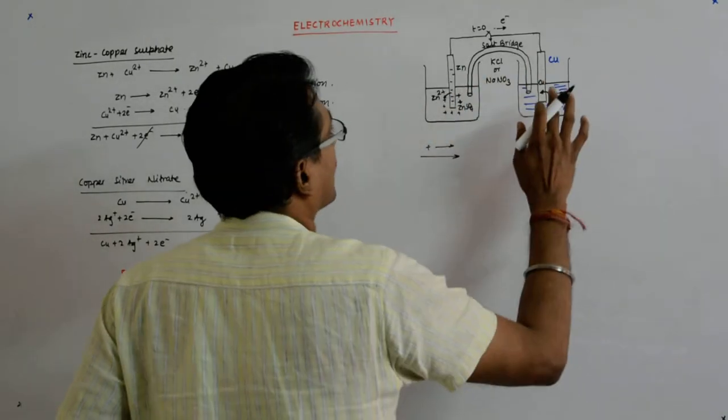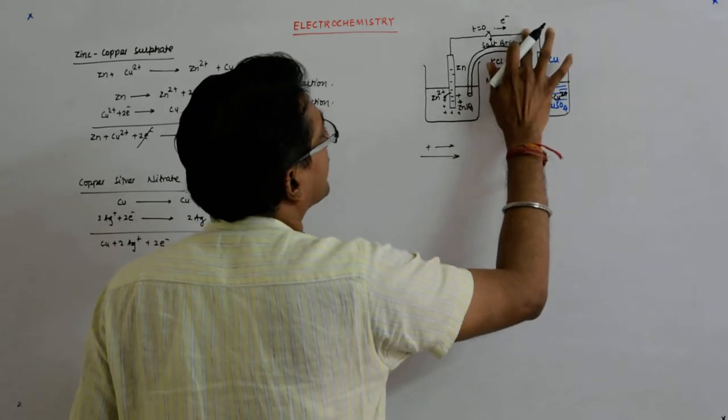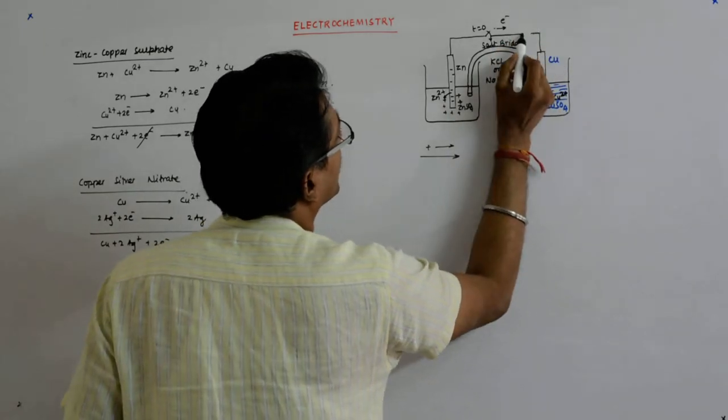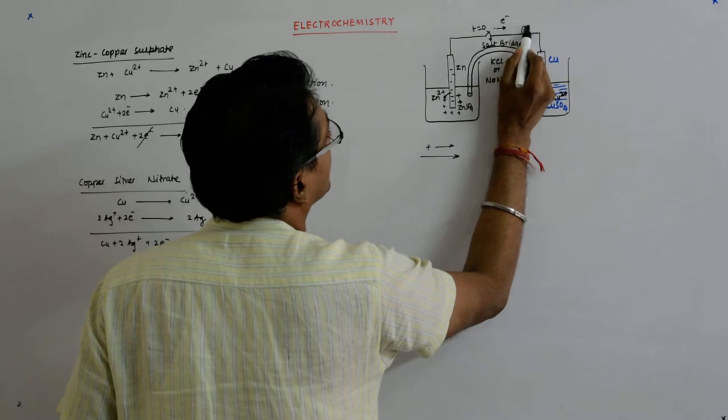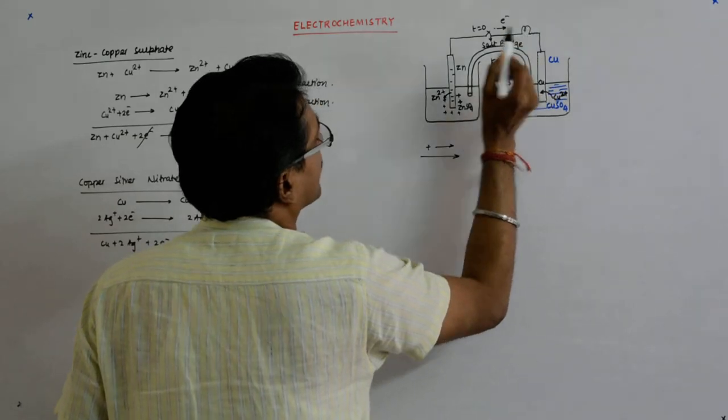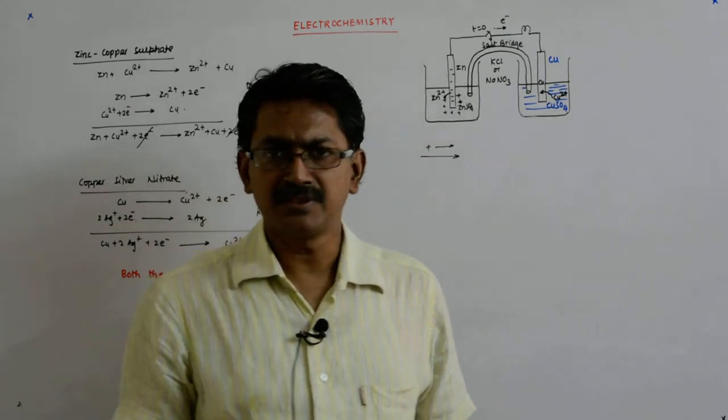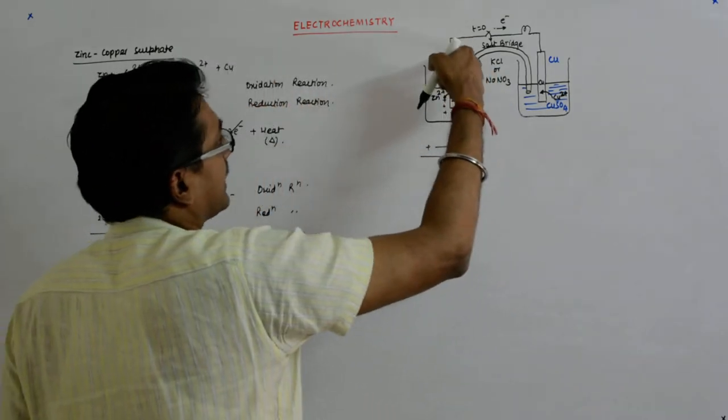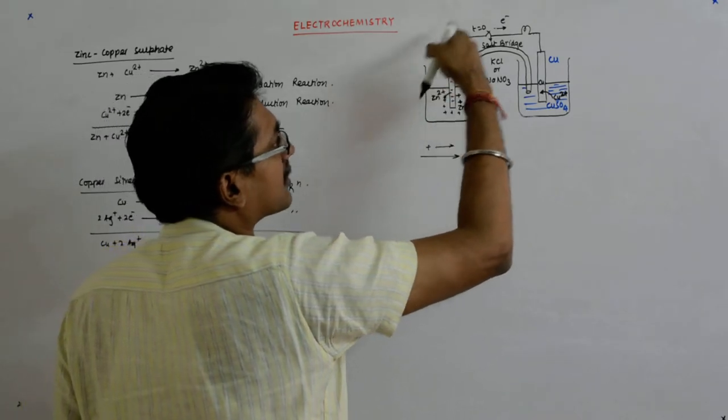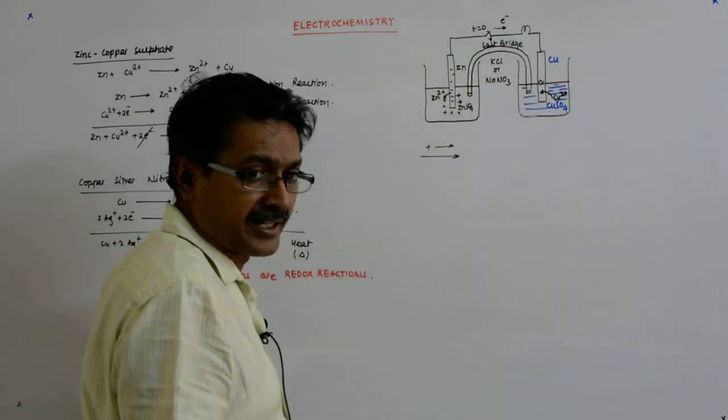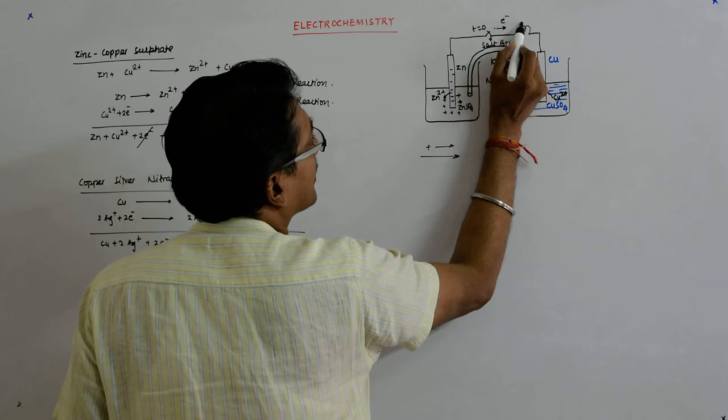So there is a current flow, and if here I put a bulb, what happens? The excess electrons that were flowing from the zinc electrode to the copper electrode will pass through this bulb and the bulb will start glowing.